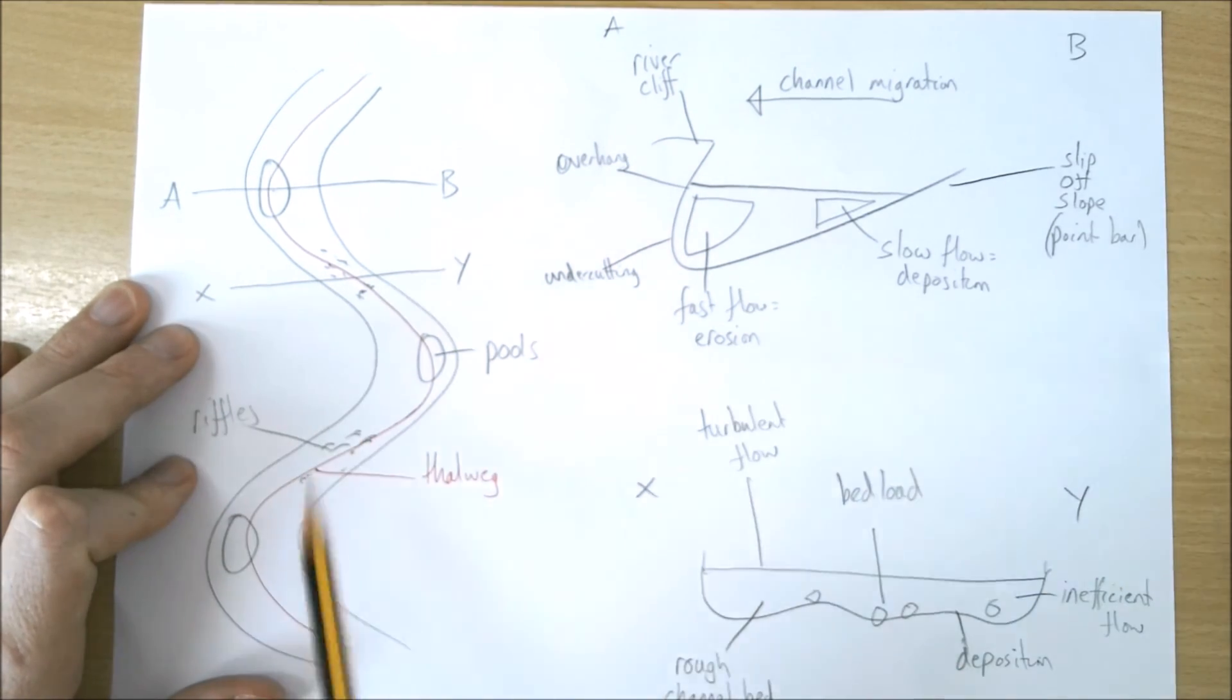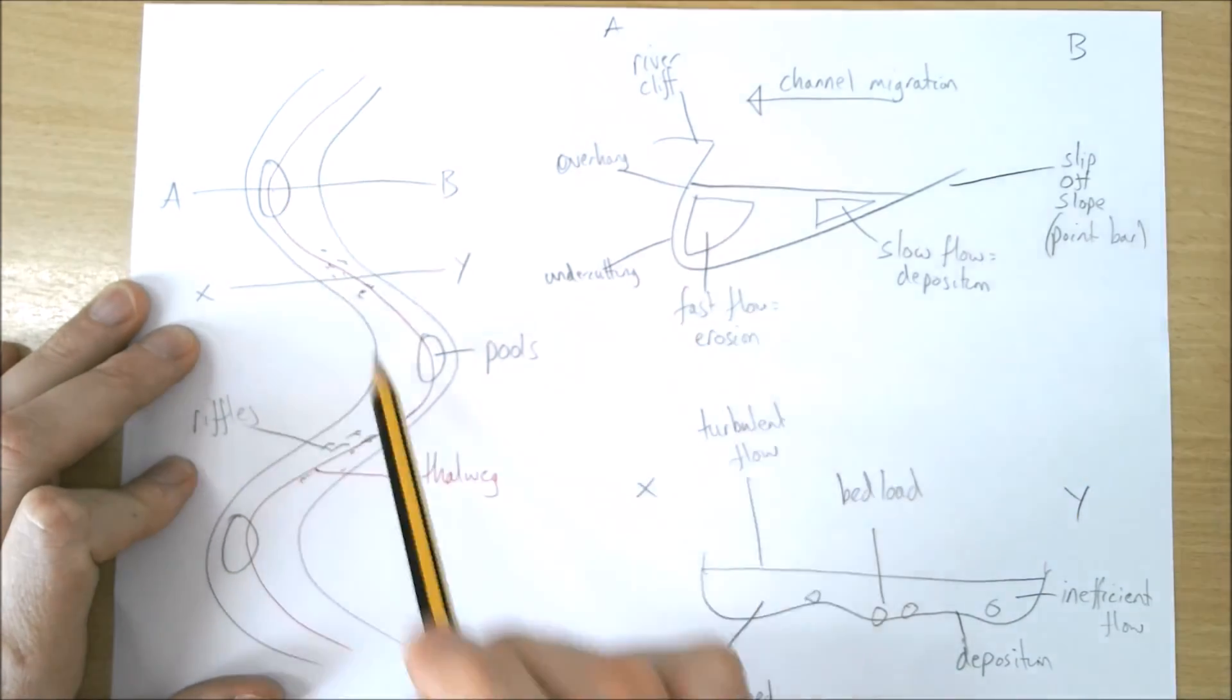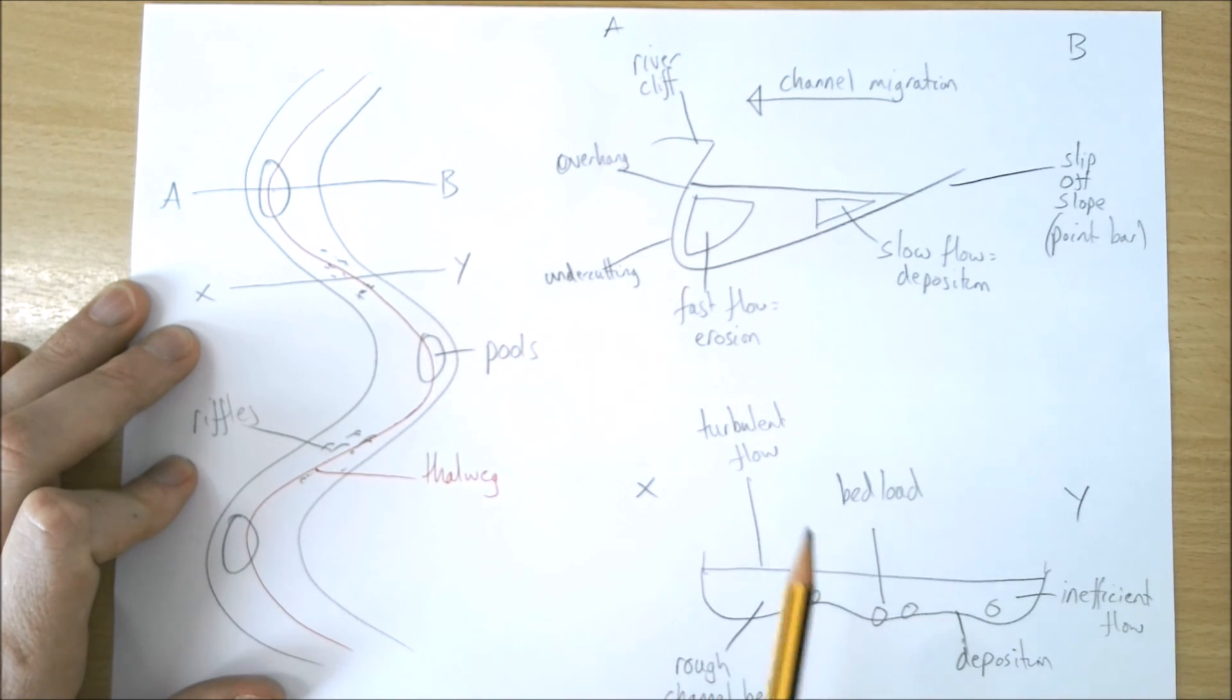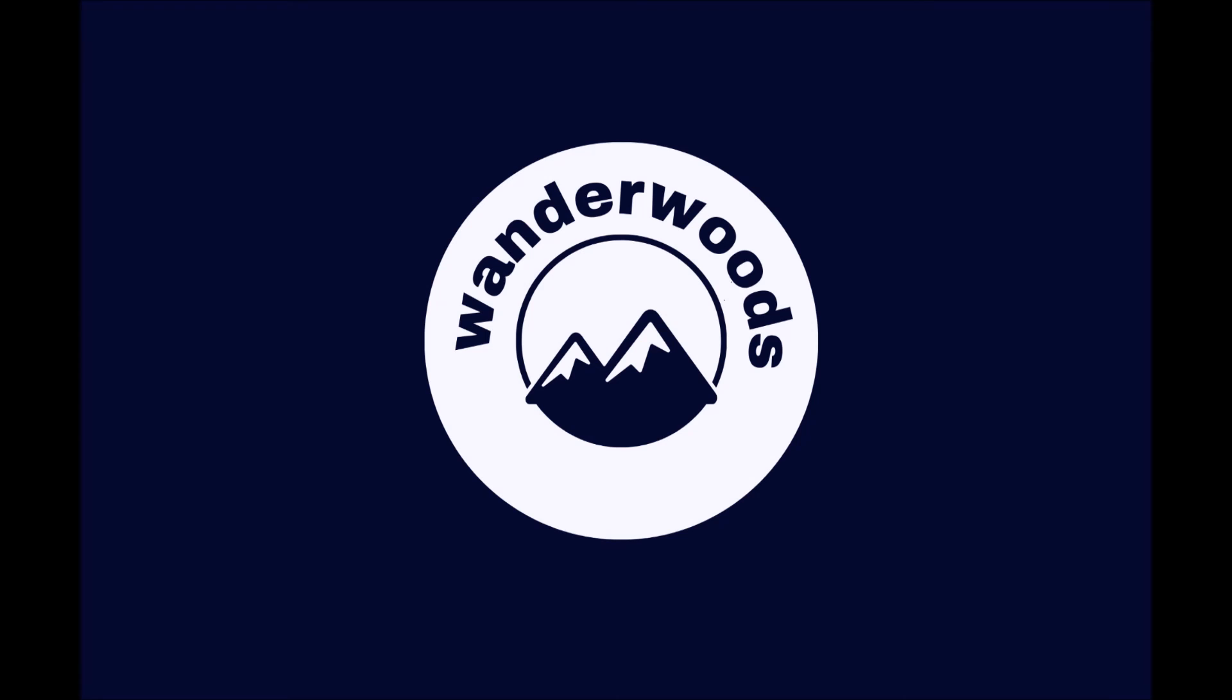So that's how we draw a meander from a bird's-eye view and also how we draw cross-sections of it.